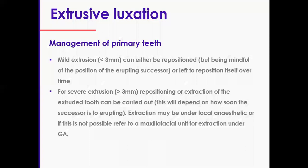In severe cases — i.e., over three millimeters — either reposition or extract, again depending on the age of the child and how long you estimate that child will be without the front tooth, not just for aesthetics but also for space maintenance. If local anaesthetic is impossible, consider inhalation sedation. GA is really a last resort — make sure you try all other options and methods first.